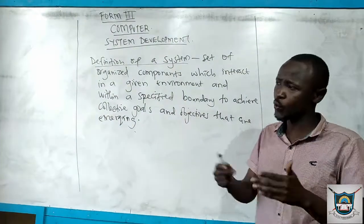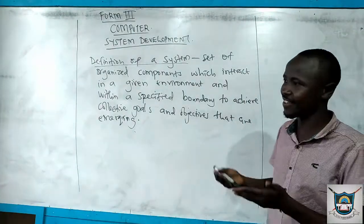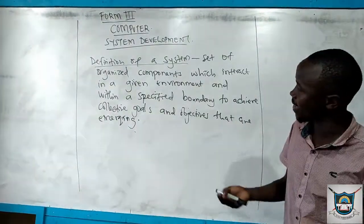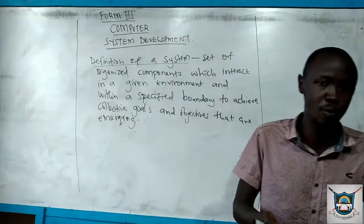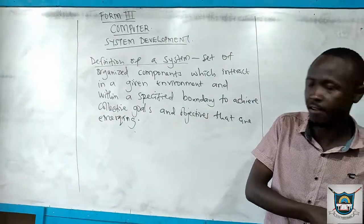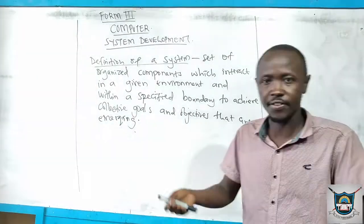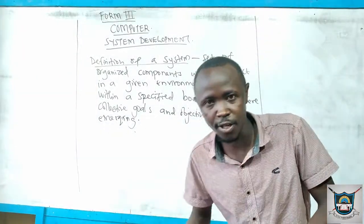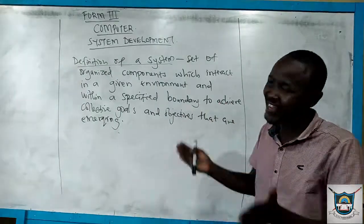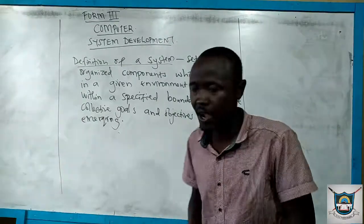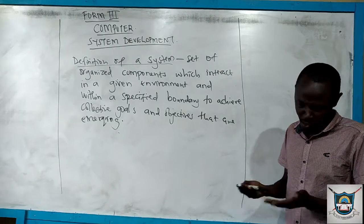We can look at several types of systems to understand the meaning of a system. For example, when we are in school, we say that it is an education system — we treat it as something used separately. Why? Because it has many components. For example, we have the minister for education, we have teachers, we have students, we have parents. So there are components, but all of them work together toward a collective goal.